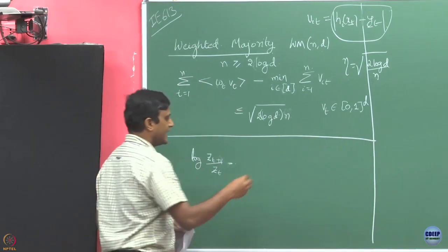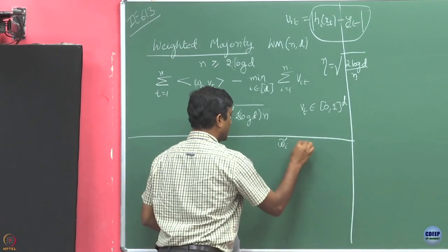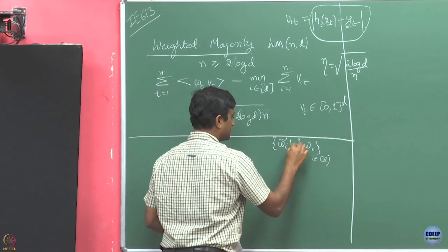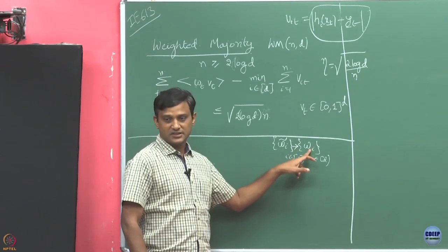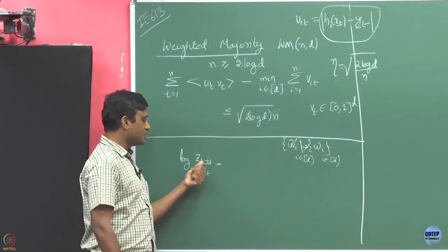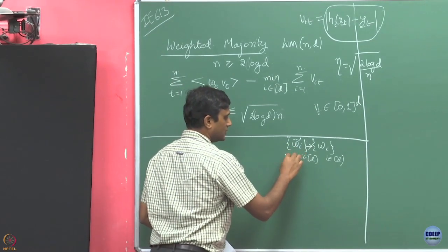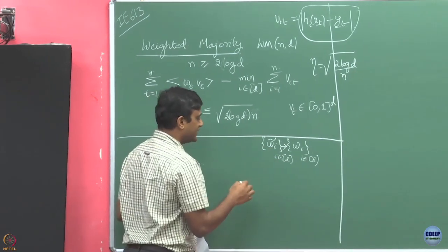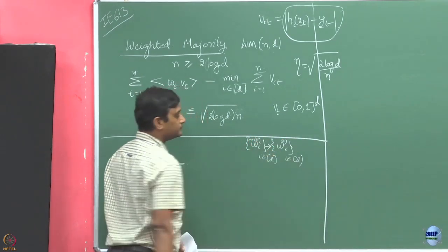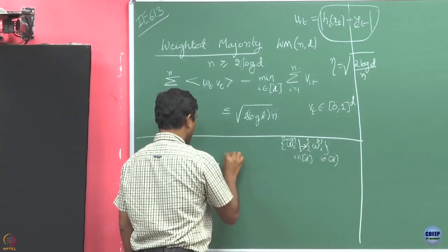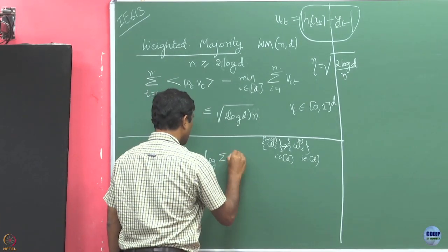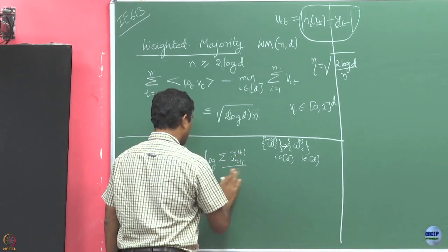We had two sets of weights: the W_i tilde's and the W_i's. When we normalized W_i tilde to get W_i, it became a probability distribution. W_i tilde was not a probability distribution. Z_{t+1} is the sum of all the W_i tilde's in round t+1. Now let us substitute the value of Z_{t+1}. Z_{t+1} equals the sum over i of W_i tilde at t+1.